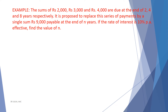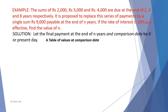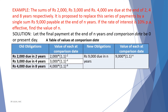Now one example on average due date. The sums of Rs. 2,000, Rs. 3,000 and Rs. 4,000 are due at the end of 2, 4 and 8 years respectively. It is proposed to replace the series of payments by a single sum of Rs. 9,000 paid at the end of n years. If the rate of interest is 10% per annum effective, find the value of n. We assume the final payment at the end of n years and the comparison date is 0, or present date. The old obligations Rs. 2,000, Rs. 3,000 and Rs. 4,000 are due in 2, 4 and 8 years respectively. Using the present value formula — amount multiplied by (1+i) raised to the power minus n — the values at comparison date are: 2,000 multiplied by 1.1 raised to the power minus 2, 3,000 multiplied by 1.1 raised to the power minus 4, and 4,000 multiplied by 1.1 raised to the power minus 8. The new obligation is Rs. 9,000 due in n years, with value at comparison date of 9,000 multiplied by 1.1 raised to the power minus n.